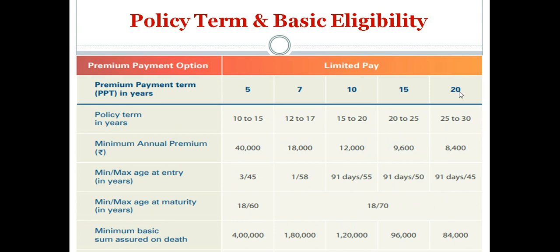Let's say we are choosing 20 years of premium payment term. The policy term will be between 25 to 30 years, and we are choosing 25 for illustration. The maximum age of entry is 45 years and maximum age at maturity will be 70 years.